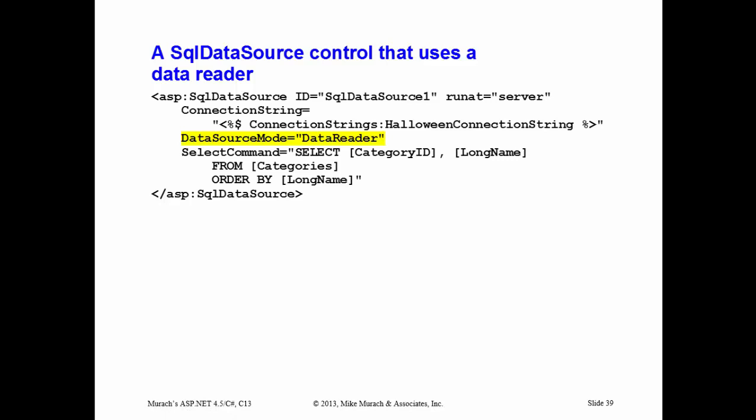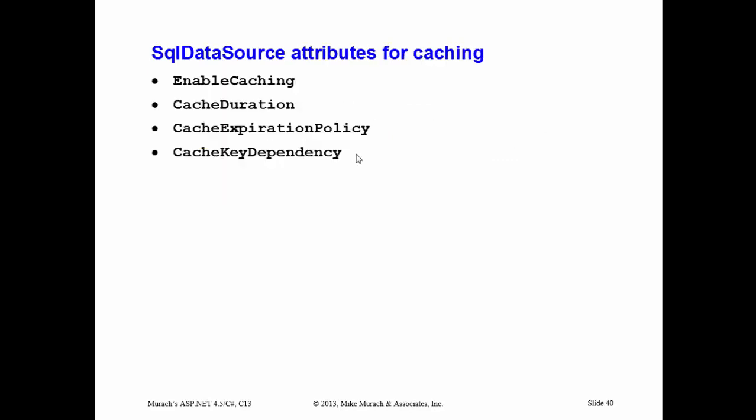Finally, they mention using a data reader — you can change the data source mode. In a nutshell, the difference between a data reader and a data set is that a data reader is a fast, forward-only class. Use data readers when you know you're only reading data — just reporting — and not taking advantage of insert, update, or delete. Setting it to data reader will perform a little faster.